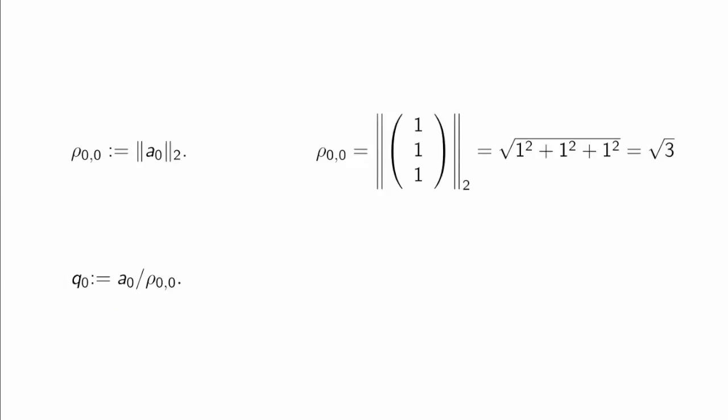So if we do this for our example, we feed in the vector 1, 1, 1. We compute its length, which is the square root of 3.